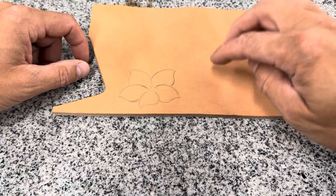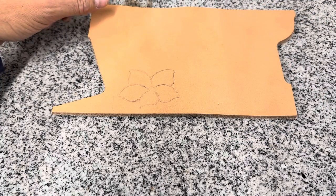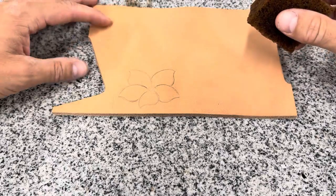Now what leather is this? This is Herman Oak leather. That's the tannery but they produce in my opinion the best veg tan leather to tool on.